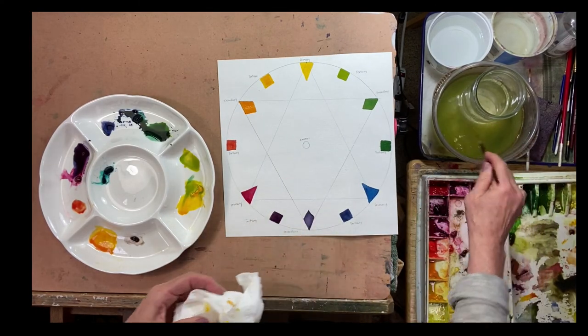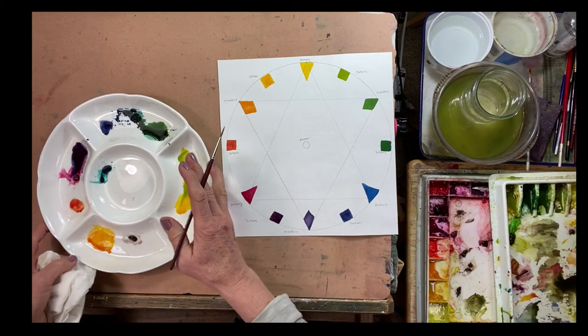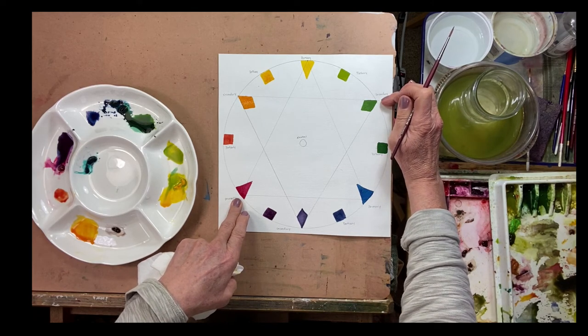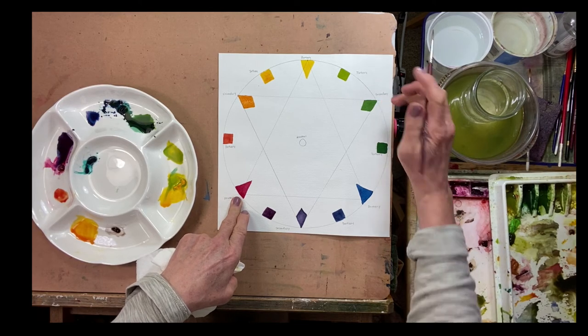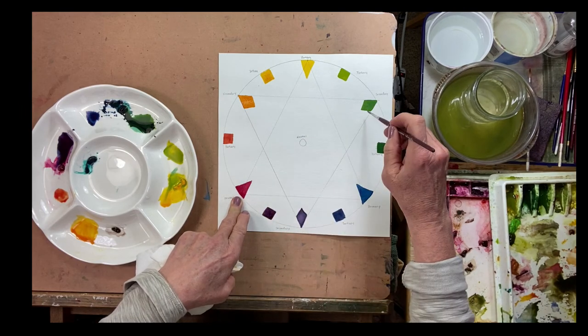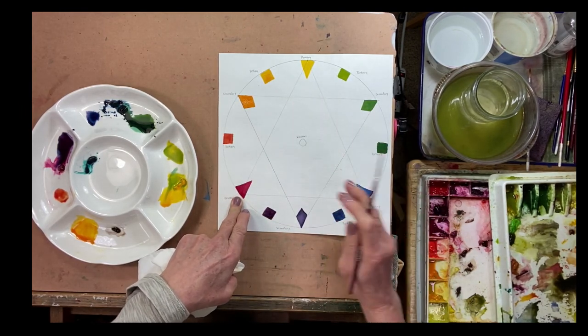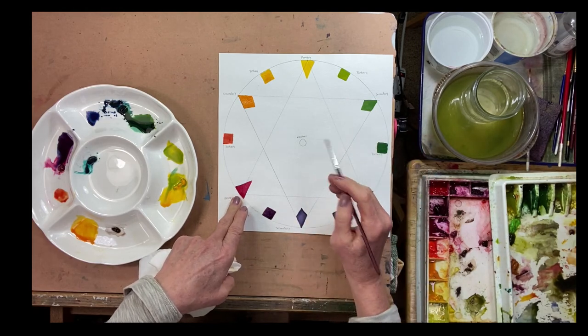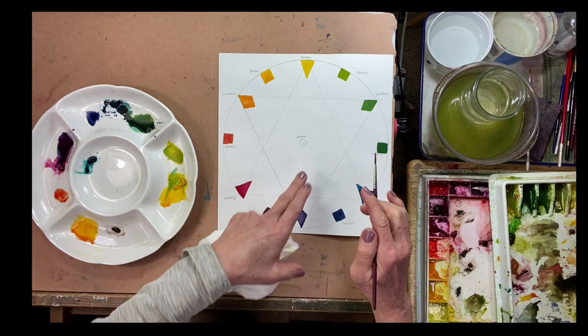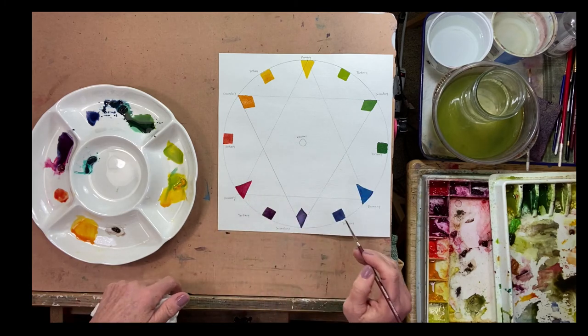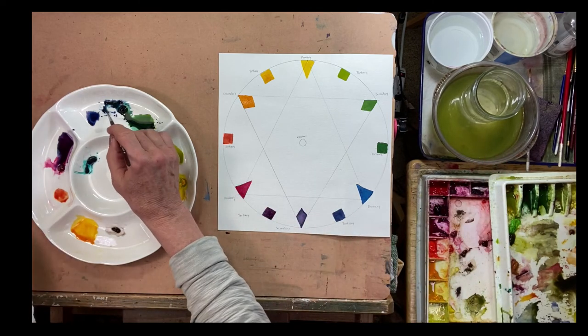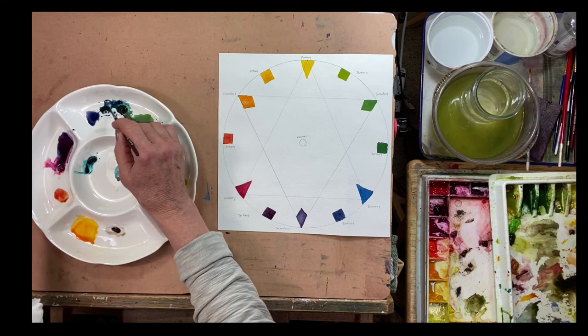And then we're going to talk about these neutrals here. Basically, when you mix any color that's across the color wheel from itself, that is a complementary color. So we've got a complementary color here with the yellow and the purple, the red and the green, the blue and the orange. And anytime you mix the two of those together, they tone each other down, they gray each other down. So that becomes a neutral, and you can get some pretty good neutrals in here. And we're going to aim for this little center guy and try to get as close to gray as I can.